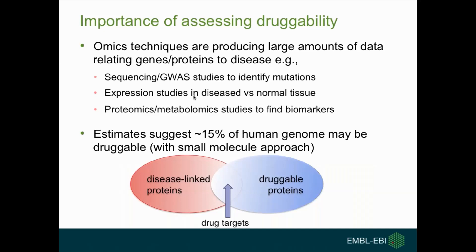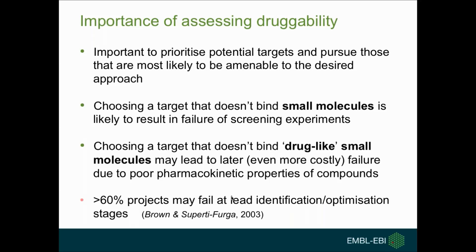So why do we really need to assess drugability? Omics techniques are producing large amounts of data relating genes or proteins to disease. Genome-wide association studies, sequencing studies, large-scale expression studies, and proteomics-metabolomics studies are all identifying candidate disease-linked proteins. When interpreting this data, we want to know which identified proteins will be most successful for drug discovery. If only around 15% of the human genome is druggable with a small molecule, we need to intersect druggable proteins with disease-linked proteins to identify the most promising drug targets.